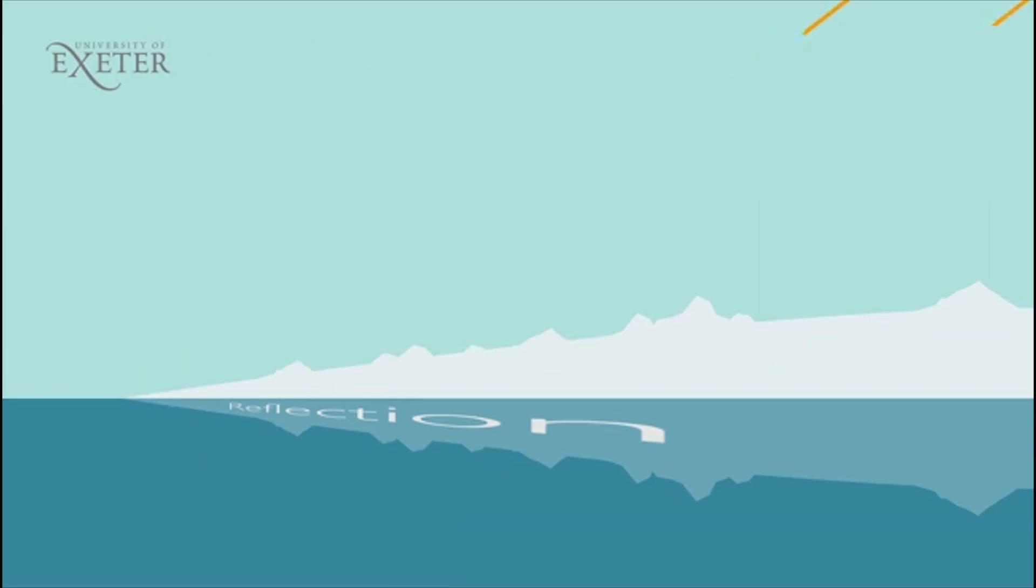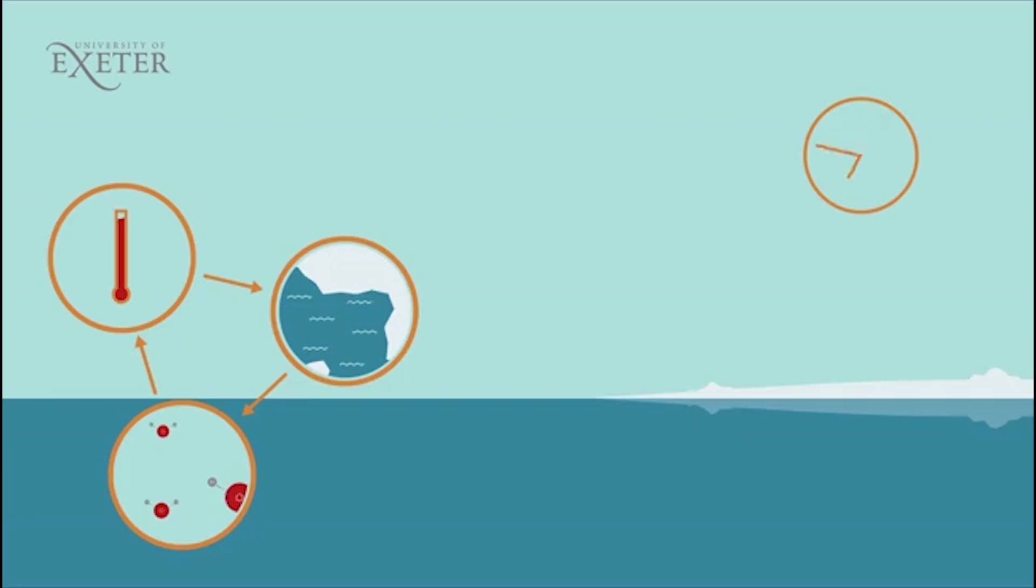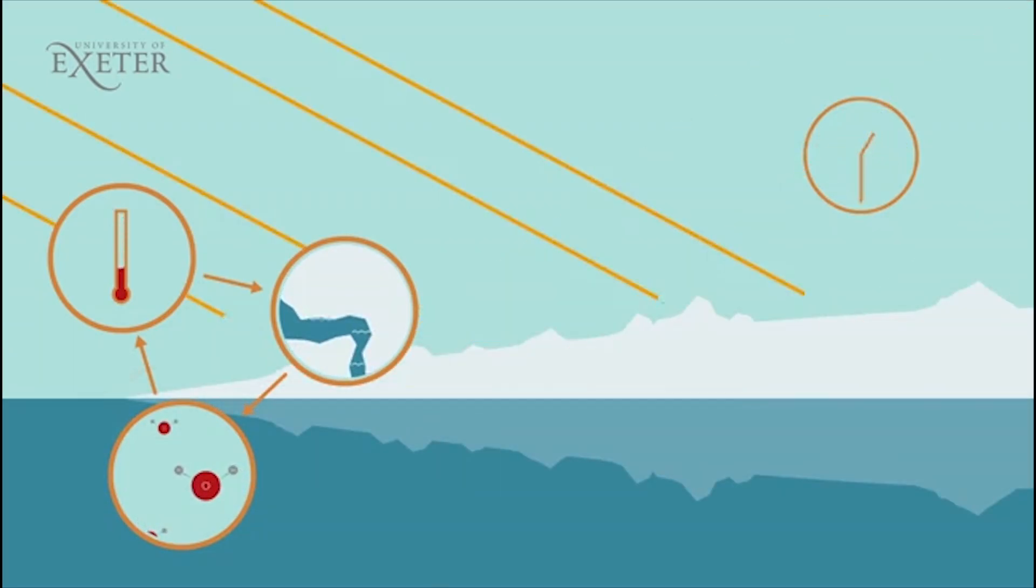But as ice cover increases, reflectivity from the surface also increases. This reflectivity reduces the absorption of sunlight by the Earth's surface and so decreases the temperature further, which increases ice cover and so on. This produces a positive feedback that we met in week 1.